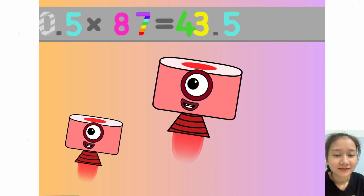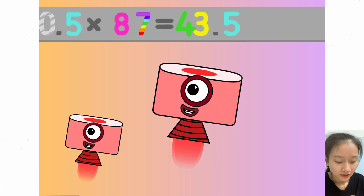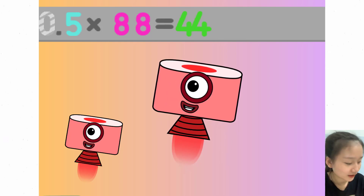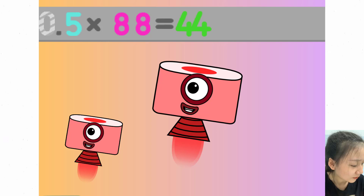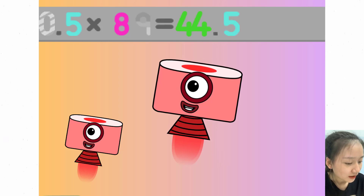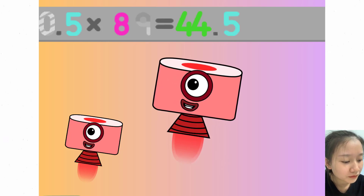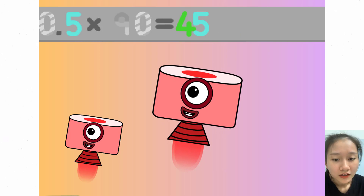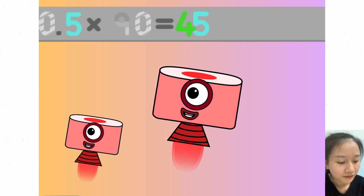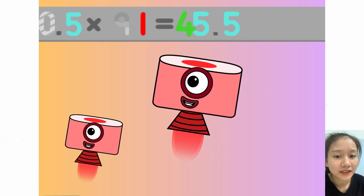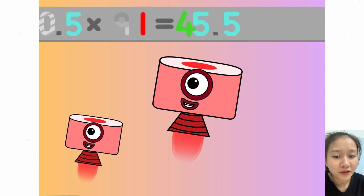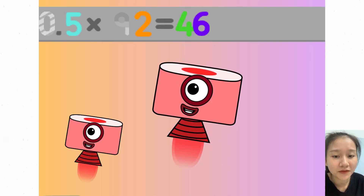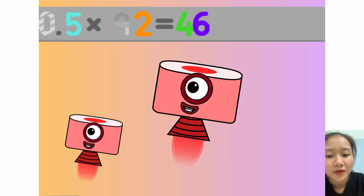0.5 times 87 equals 43.5. 0.5 times 88 equals 44. 0.5 times 89 equals 44.5. 0.5 times 90 equals 45. 0.5 times 91 equals 45.5. 0.5 times 92 equals 46.